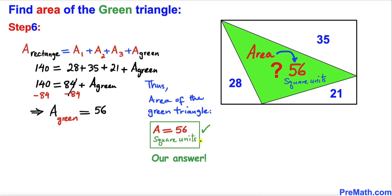So the area of this green triangle turns out to be 56 square units. Thanks for watching and please don't forget to subscribe to my channel for more exciting videos. Bye!